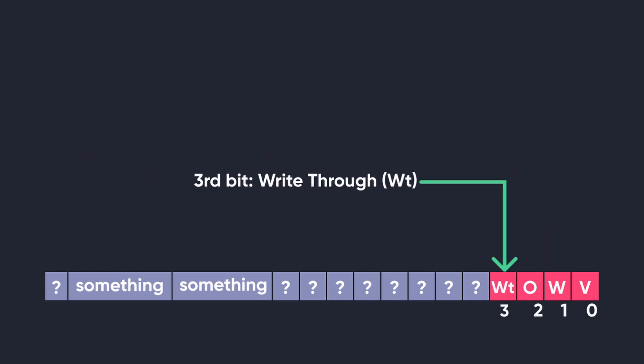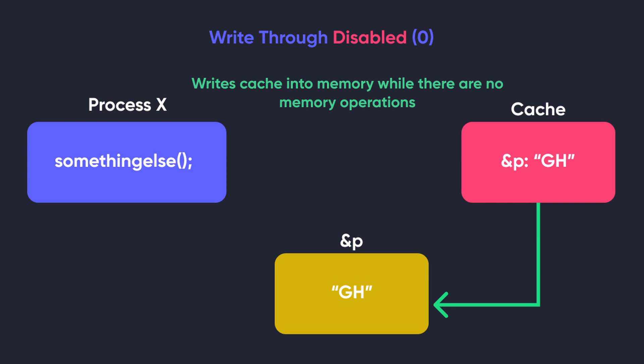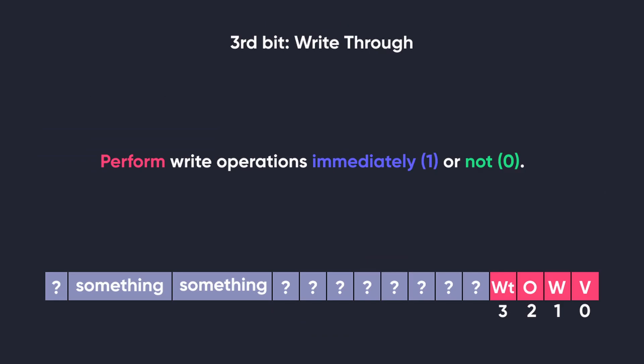The third bit is the write-through bit. To understand this, let's first consider what happens when it is disabled. Whenever a process writes to a memory location with write-through disabled, instead of the main memory location being updated directly, the cache of that memory gets updated first, and the cache is written back to the original memory when no memory operations are happening on that address. When write-through is enabled, there is no cache involved, so this bit tells whether write operations should be performed immediately or not.